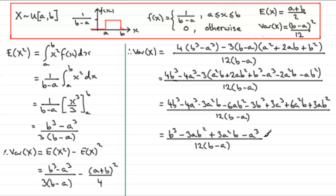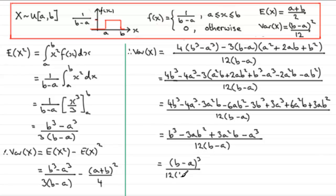It helps to know the result in advance. Because we have b minus a in the denominator, the numerator should factorise, and indeed it does — it factorises to b minus a all cubed, which you can verify using the binomial expansion. So we have b minus a all cubed over 12 times b minus a. Cancelling the factor of b minus a leaves b minus a all squared over 12. Therefore the variance of x is b minus a all squared over 12.